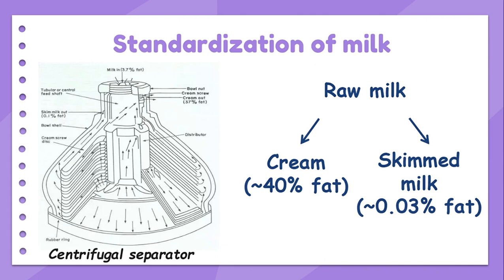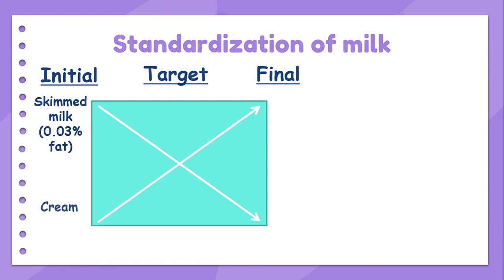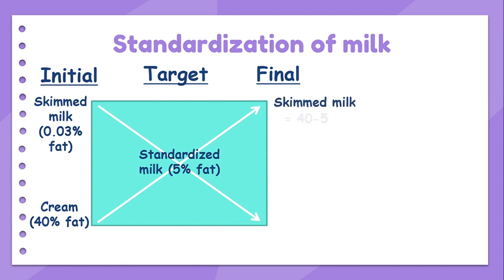In order to standardize the fat content in milk, the cream and skimmed milk can be mixed in a certain ratio that gives a desired percentage of fat. For example, given that skimmed milk has 0.03% fat and cream has 40% fat, in order to produce milk with 5% fat: D equals 40 minus 5,